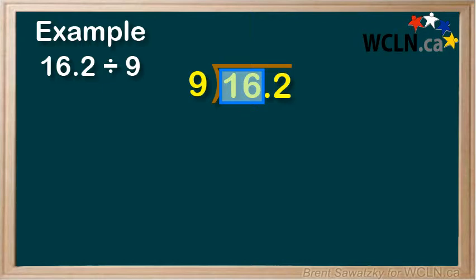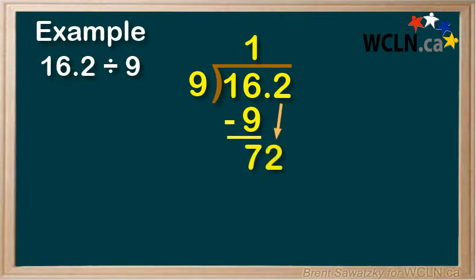Can 9 go into 16? Yes. 1 times 9 is 9, so we put the 1 above the 6 in the quotient, as we're working with the 16. 9 times 1 equals 9 goes below the 16, and we're ready to subtract. 16 minus 9 is 7. We bring down the 2 from the dividend, and we have 72.